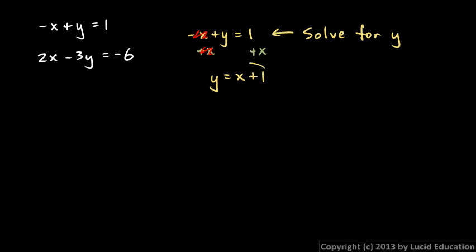Now what I do, I take this expression now, which is equal to y, and I'm going to substitute that in for y in the other equation. So let me write the other equation down here: 2x minus 3y equals negative 6. It's helpful to draw this circle and this arrow here. We're going to substitute that in for y, because that is equal to y.